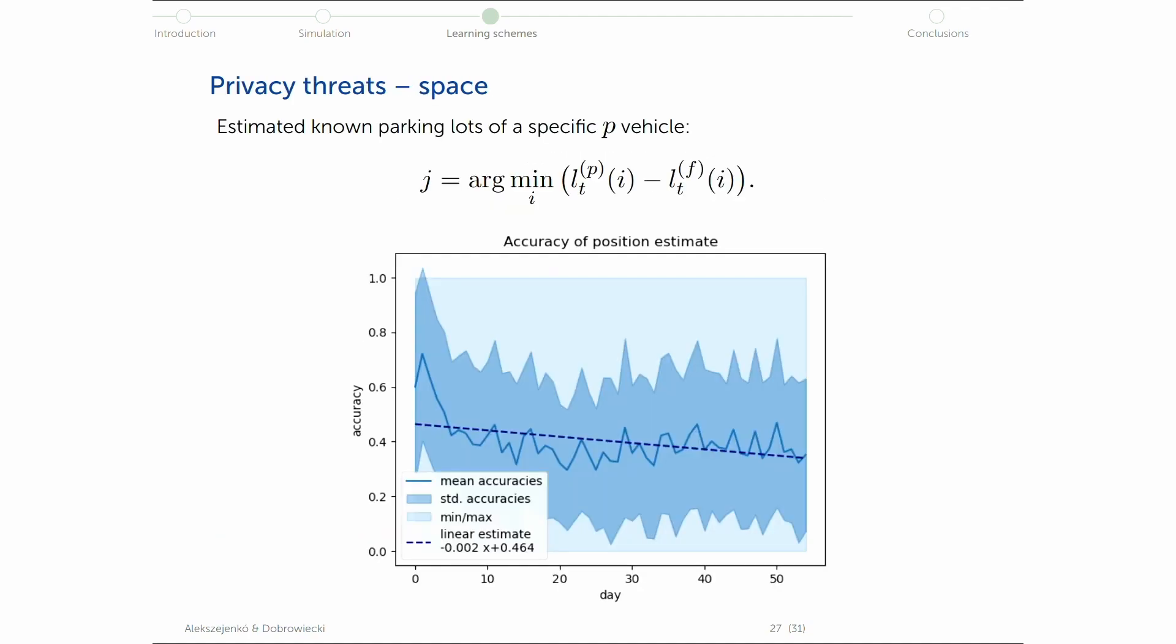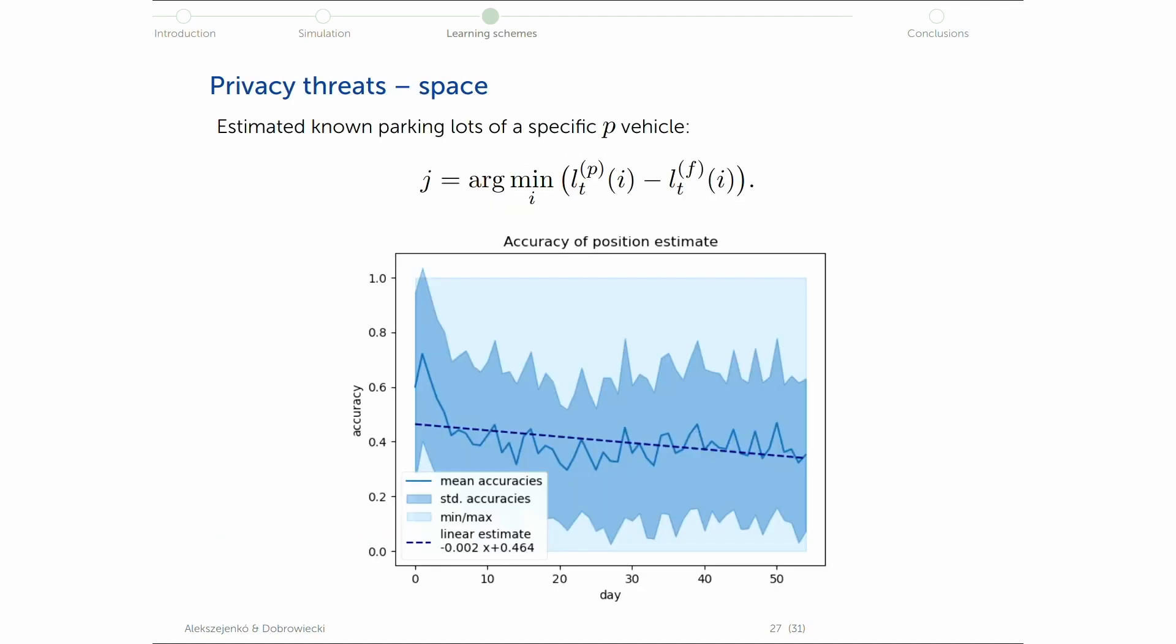And let's see how this performs in terms of privacy. So here, we can make a little trick that we have a federated model and a model at a vehicle. And let's compare them and try to select those five parking lots which are more accurately predicted in a particular vehicle, because I guess these vehicles visited those parking lots which are more accurately approximated.